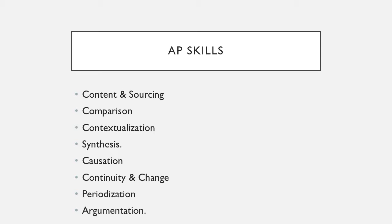Each time you write this essay, they're going to ask you to show off your AP skills. There's really no particular order to them — they're also not even in alphabetical order. This is the one that AP puts together. The first skill is content and sourcing. This is just knowing your material, knowing what happened when, what happened in what order.